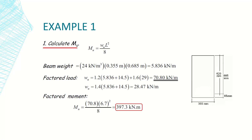For a simply supported beam, M_ultimate equals W_ultimate × L² / 8. In order to determine M_ultimate, I first need to determine W_ultimate, the ultimate distributed load, which is composed of three types of loading.